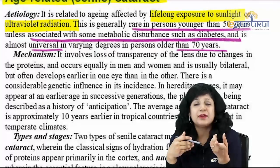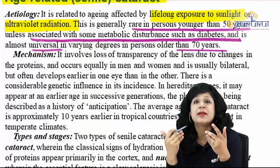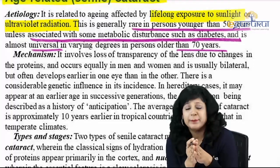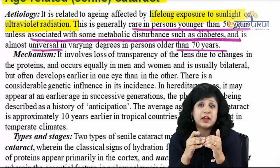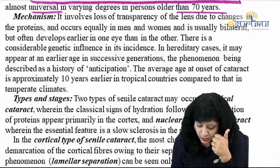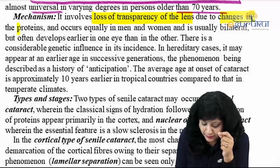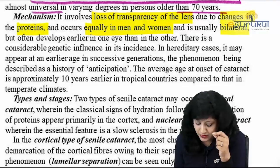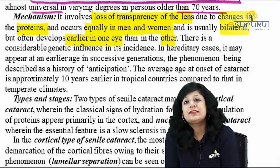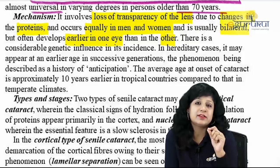The mechanism involves loss of transparency of the lens due to changes in proteins. It is equal in men and women, usually bilateral, though one eye typically develops cataract earlier than the other. Aging takes place equally in both eyes, yet one is usually affected earlier — a question patients sometimes ask that has no clear answer beyond natural variation.